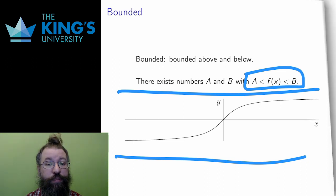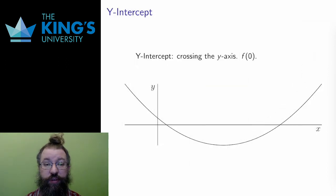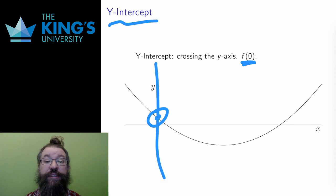An intercept is a place where a function crosses an axis. The y-intercept is therefore where the function crosses the y-axis. It is found simply by calculating f of 0, since the y-axis is all points where the x-coordinate is 0. There is only one possible y-intercept, because of the vertical line test for functions. The y-axis is a vertical line, so it can only cross the graph once. If 0 is not in the domain, there is no y-intercept.